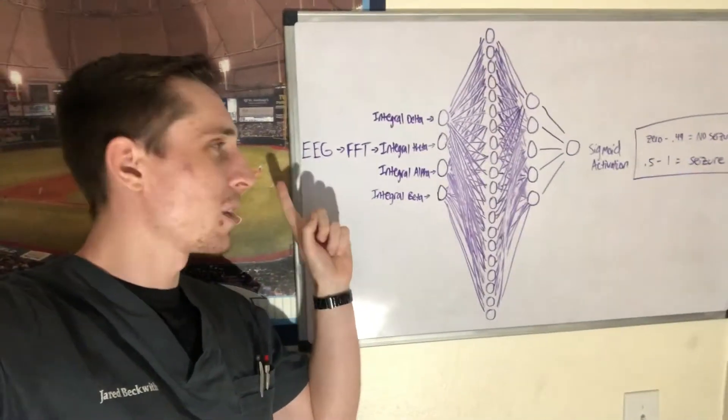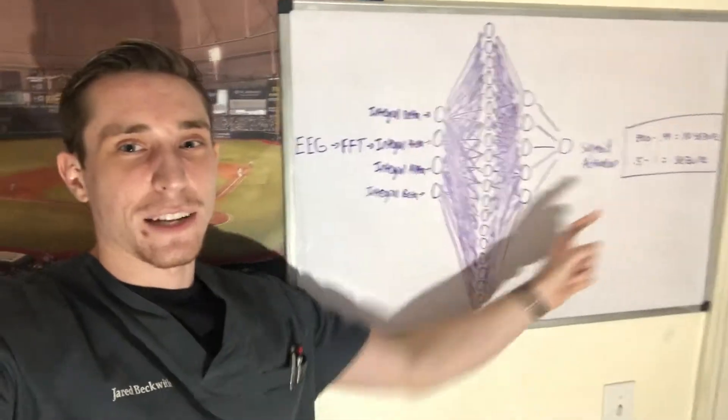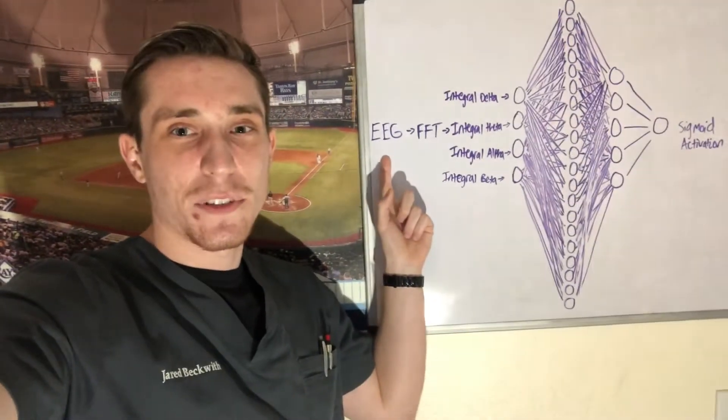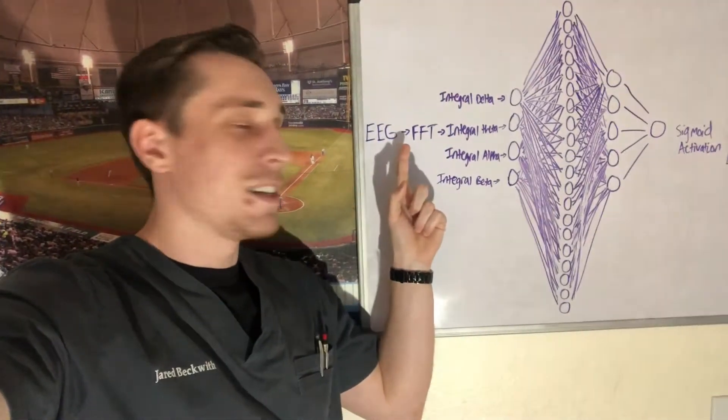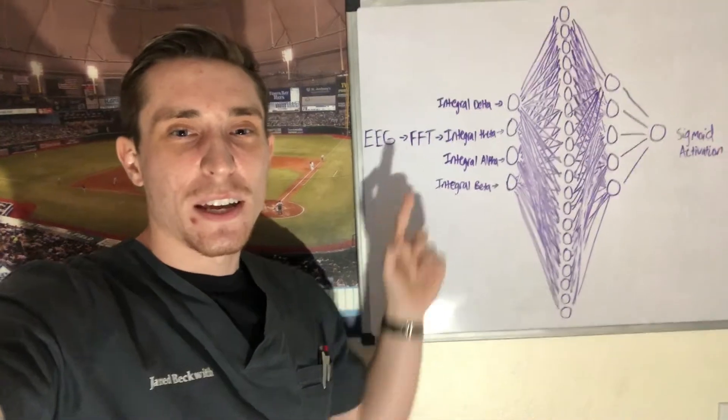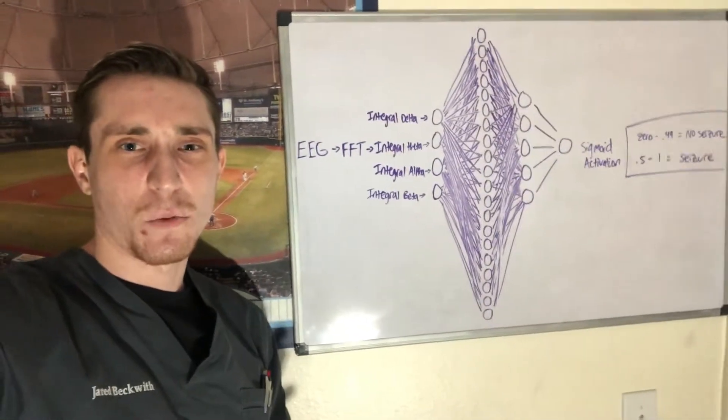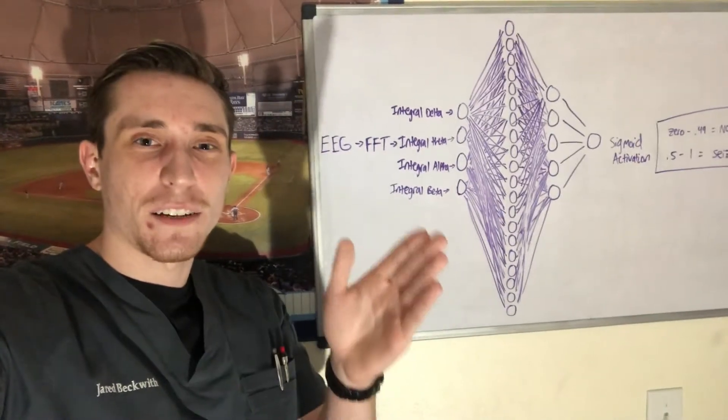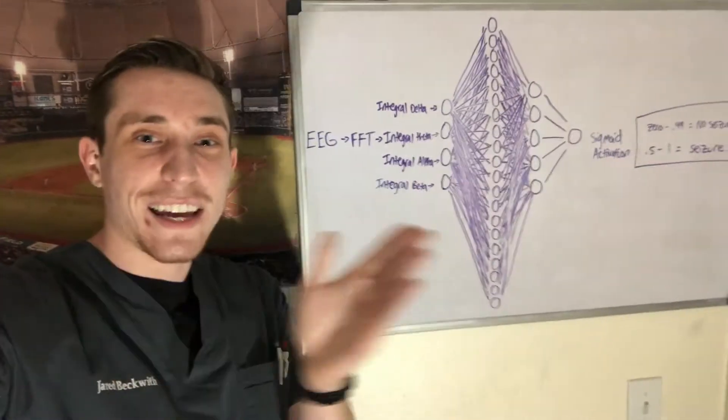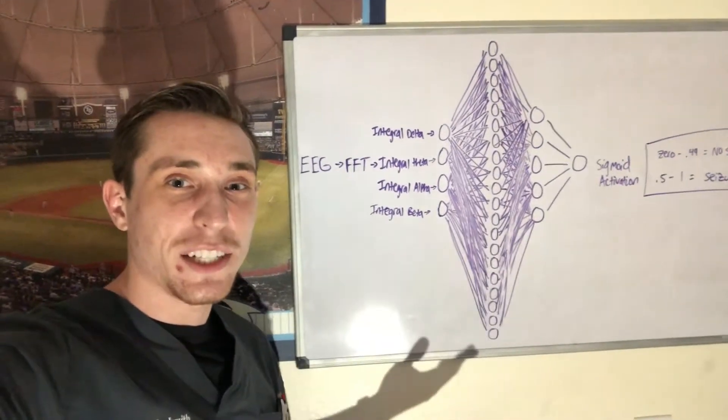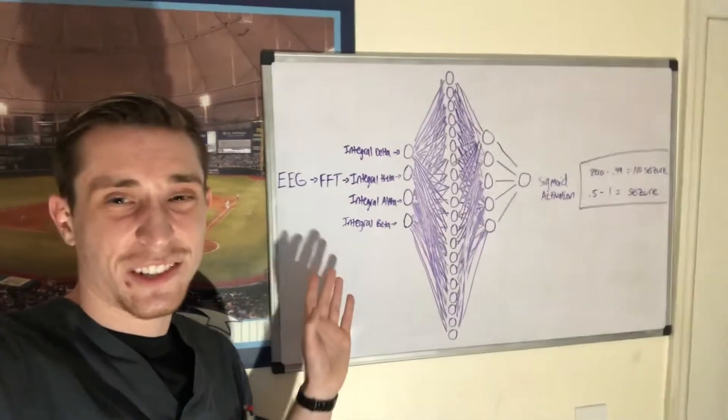So the first step you're going to want to do is you have your EEG data, whatever that happens to be, and then you have to take it and use an algorithm called the fast Fourier transform. Now that's just a complicated way of saying you know how we usually have EEG data from left to right in seconds. When you take the fast Fourier transform of an EEG data sample, instead of seeing the data as left to right in time, you're going to see the data left to right as Hertz.